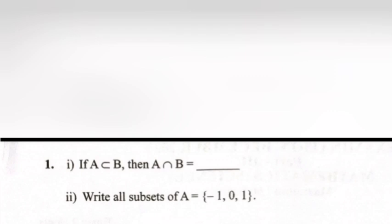Problem 1: If a is a subset of b, then a intersection b is equal to, answer: a.